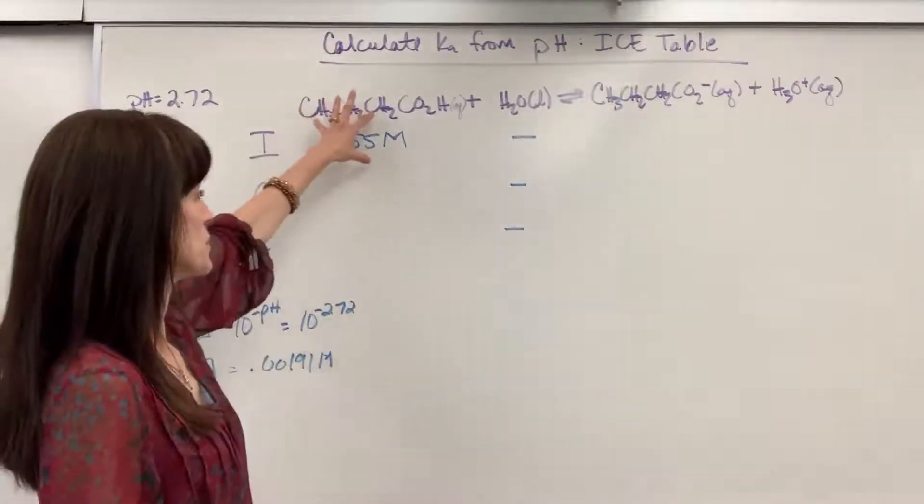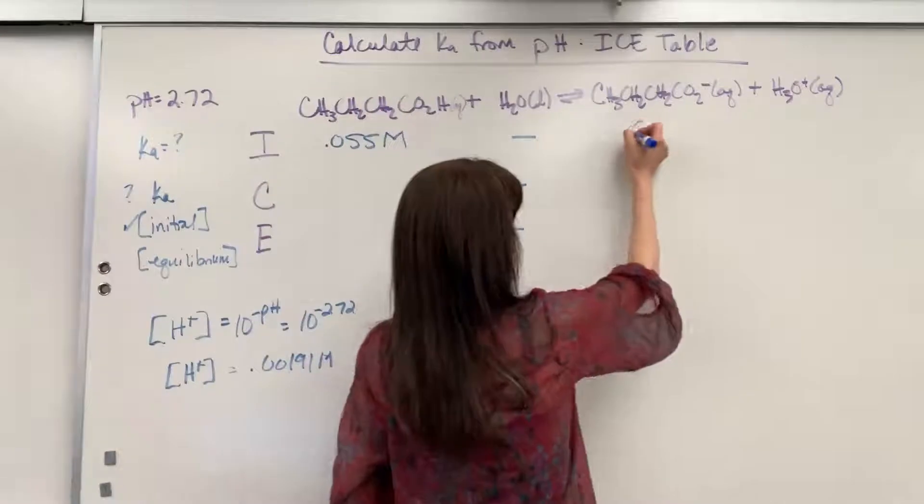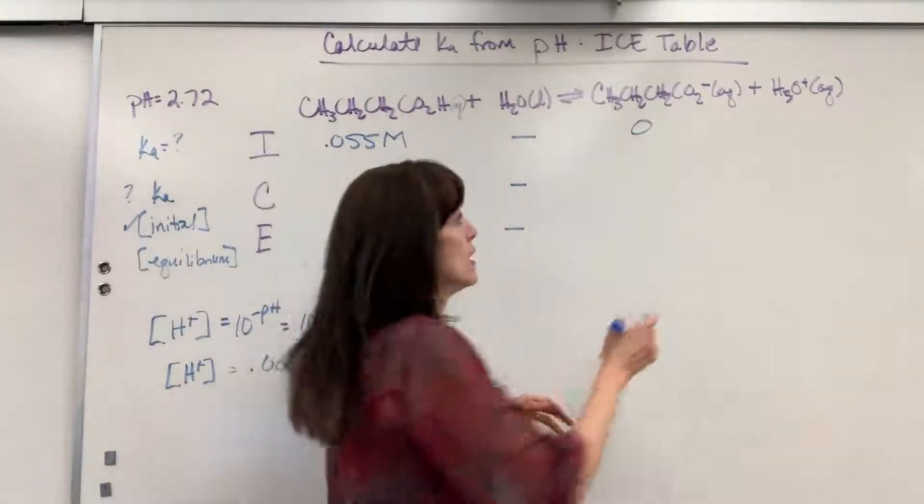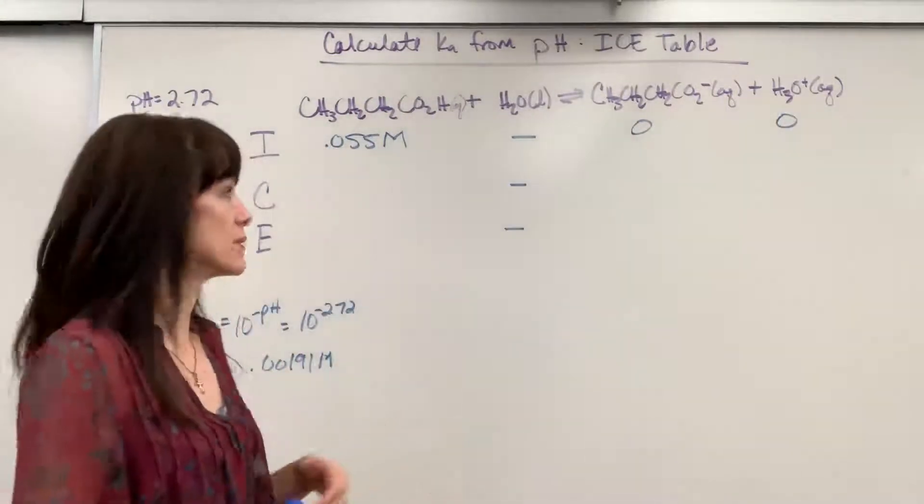Now initially, when I first have this butanoic acid, there's not going to be any butanoic ion, zero, and no hydrogen ion. Zero.